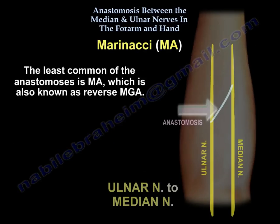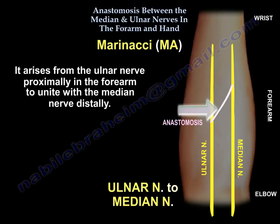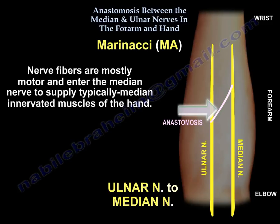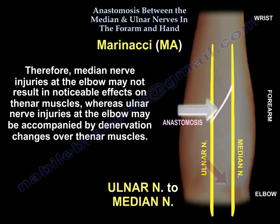Least common of the anastomoses is Marinacci, also known as reverse Martin Gruber. It arises from the ulnar nerve proximally in the forearm to unite with the median nerve distally. Nerve fibers are mostly motor and enter the median nerve to supply typically median-innervated muscles of the hand. Therefore, median nerve injuries at the elbow may not result in noticeable effects on thenar muscles, whereas ulnar nerve injuries at the elbow may be accompanied by denervation changes over thenar muscles.